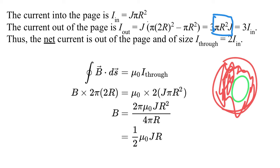It is traditional to express this as the loop density n (turns per unit length), so B equals mu naught I times n. It doesn't matter how long the solenoid is, just how dense those turns are.